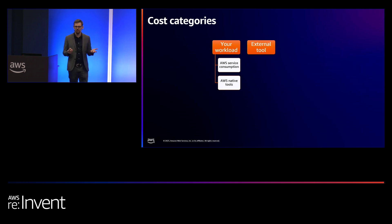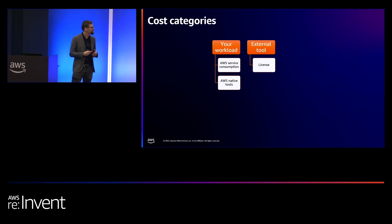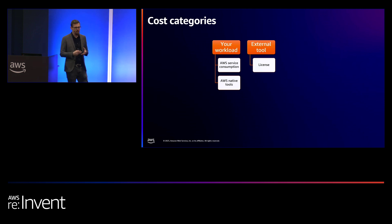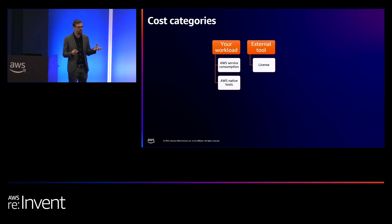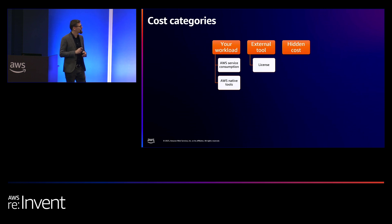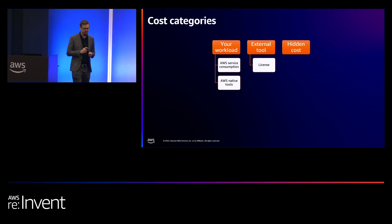Then we go to the external tool. What's the cost for an external tool? Usually a license. They can look all different — from the amount of accounts you have, to the amount of data you're extracting, and a lot of different ways. But then we have, I would say, the interesting part here, which is the hidden costs or less known costs.